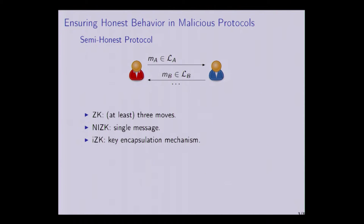Zero-knowledge proofs have various applications in cryptography, one of them being secure two-party computation. In secure two-party computation, you have two players, Alice and Bob, who are interacting to compute a known function of their joint input. They are exchanging messages: Alice could send some message M-A belonging to some NP language L-A, and Bob answers with some message M-B belonging to some NP language L-B.